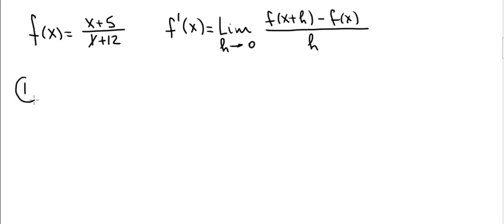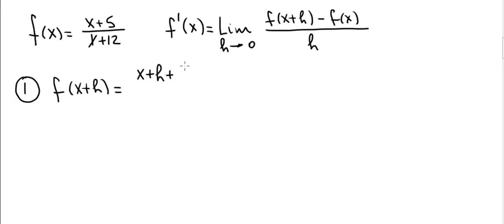We're going to do this in 4 steps. Step 1 is to compute f of x plus h. Wherever you see x in f of x, you're going to replace it with x plus h. So there is an x in the numerator — it becomes x plus h, then we add a 5. There's also an x in the denominator — it becomes x plus h, and we add a 12. That's the end of step 1.